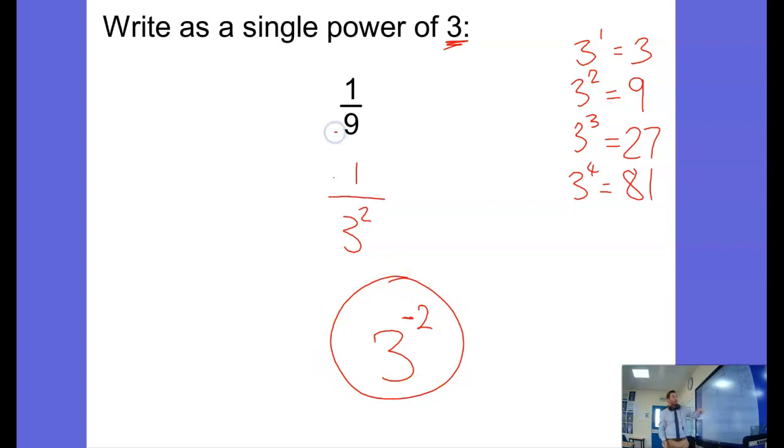So you need to spot what power of 3 is that bottom number, and then the 1 over we bring in that negative power.